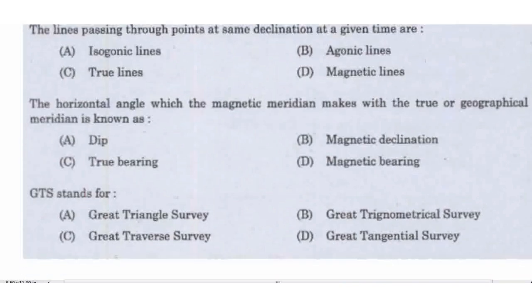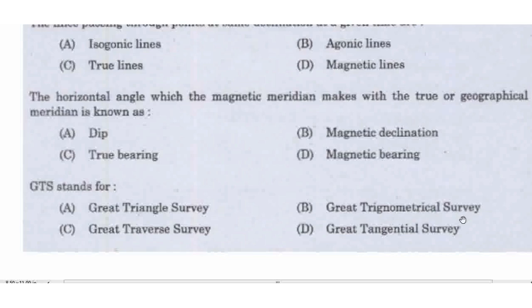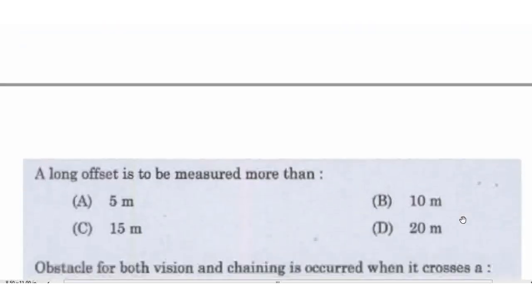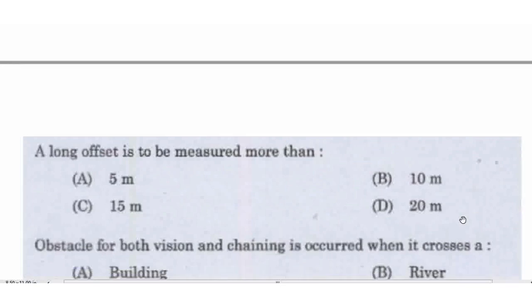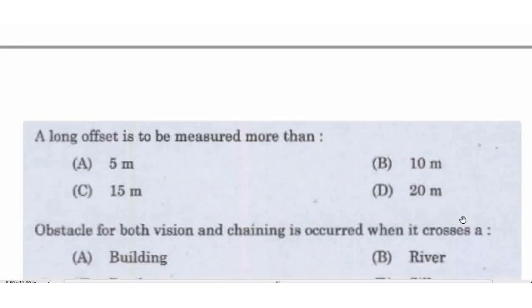GTS stands for Great Trigonometrical Survey — right answer Option B. GTS benchmarks are established by the Survey of India. A long offset is to be measured when greater than 15 meters; less than 15 meters is a short offset.